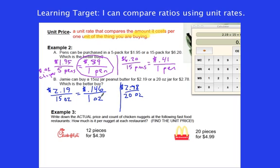Alright, for the other one, $2.78 divided by 20. And we get $0.139 for one ounce.